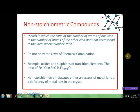Non-stoichiometry is often observed in the oxides and sulfides of transition elements. One example is iron oxide, where the iron and oxide ions are present in the ratio 0.98 to 1 instead of the expected ratio of 1 to 1. Non-stoichiometry indicates that the metal ions are either in excess of the required number or less than the required number present in the crystal.